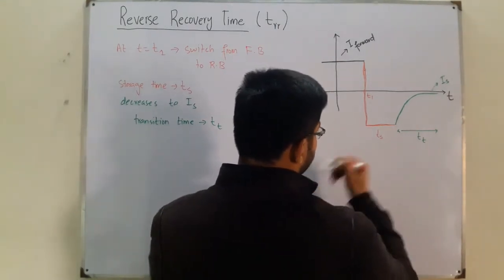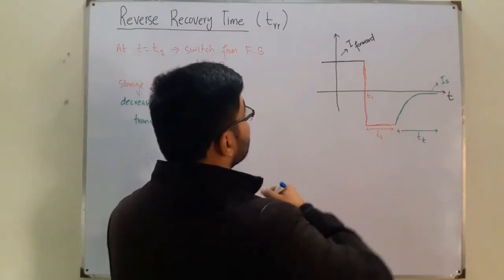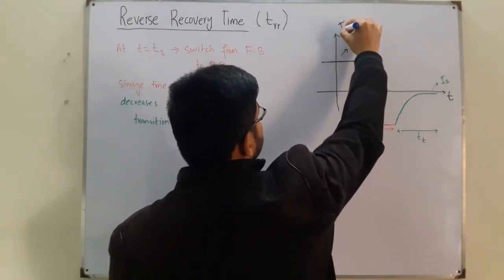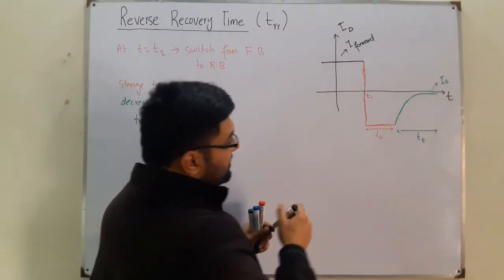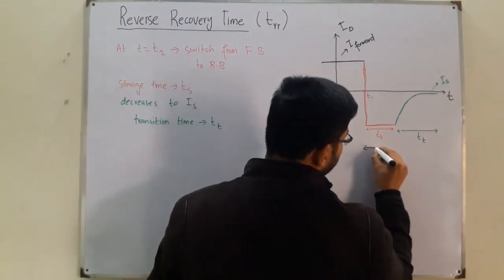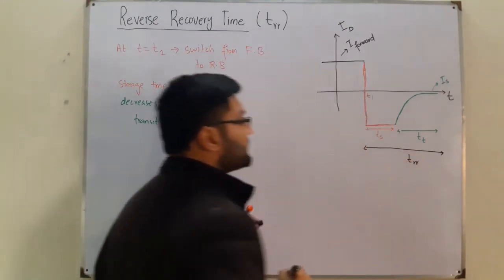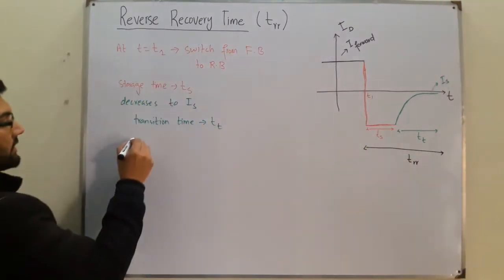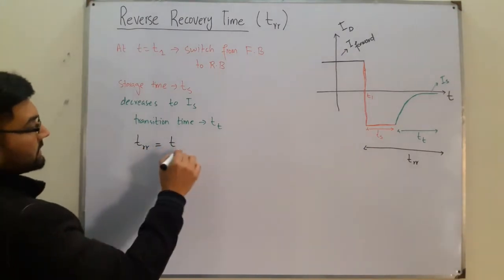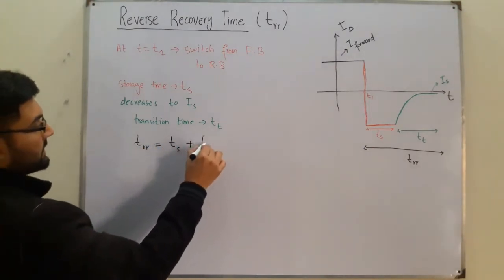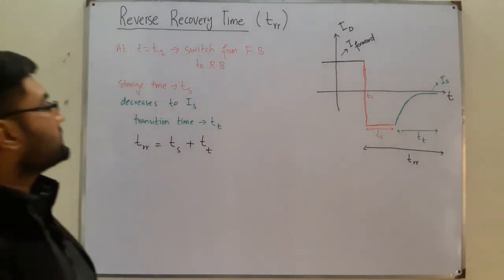The sum of the storage time and the transition time is the reverse recovery time. So the reverse recovery time TRR equals the storage time Ts plus the transition time Tt.